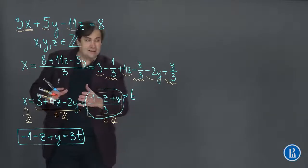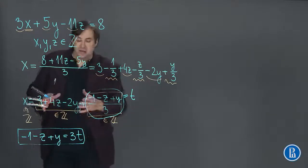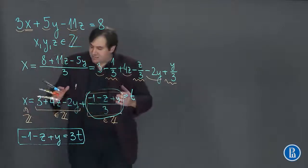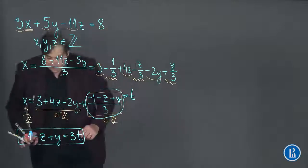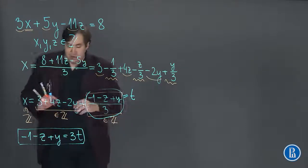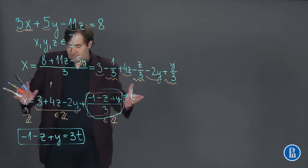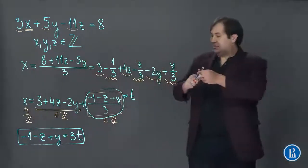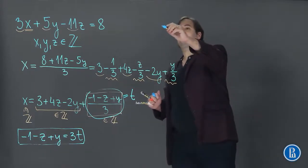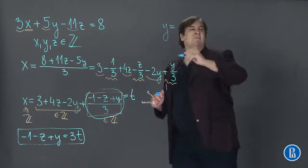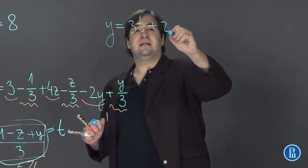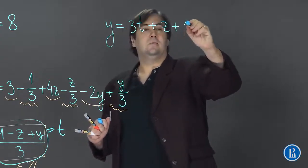So we can right now go to the next step and express one of these variables, any one of them, using the other two. So let's take y. So y is equal to 3t plus z plus 1.